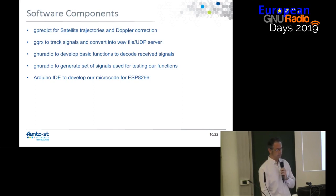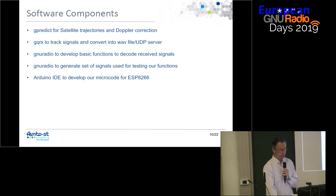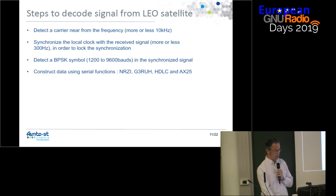For the software, we use J-Predict for satellite passes and Doppler correction. We use GQRX for converting the signal to baseband, and also GNU Radio to develop basic functions and generate test signals. Finally, we use the Arduino IDE to develop our microcode on the microcontroller, the ESP8266.